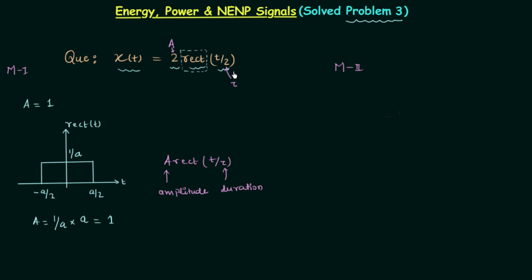If you look at this signal closely, it is a rectangular signal, which is a finite duration signal. When a signal is finite duration there are two possibilities: it can be an NP signal or an energy signal. It will be an NP signal only if the amplitude reaches infinity at some instance. But in rectangular signals the amplitude is never infinite, therefore it is not an NP signal — it is an energy signal.